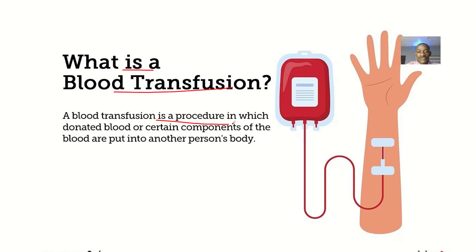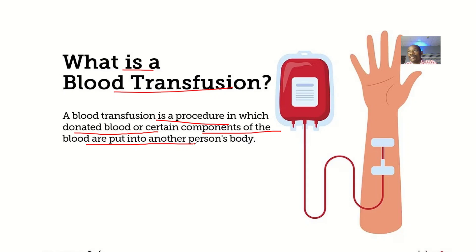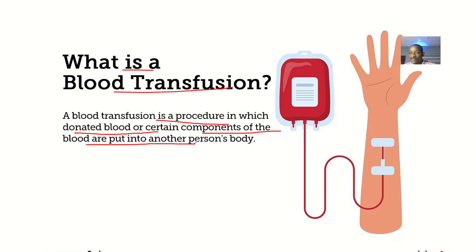A blood transfusion is a procedure in which donated blood or certain components of blood are put into another person's body. Donated blood could be whole blood, it could be other components like plasma concentrate, it could be cryoprecipitate, or it could be clotting factors concentrate. You take it from the donor and put it into the recipient.